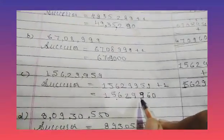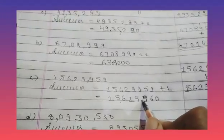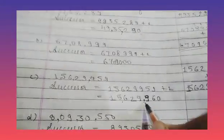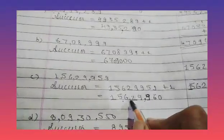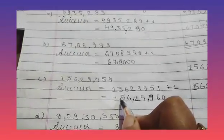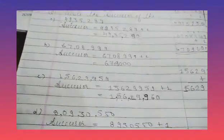We have 1 crore 56 lakhs 29,959. If we add 1, it becomes 1 crore 56 lakhs 29,960. We put commas: 3 digits from the right, then 2 digits, then 2 digits.